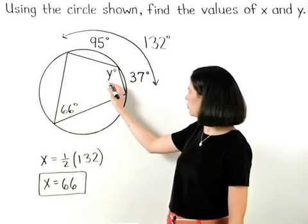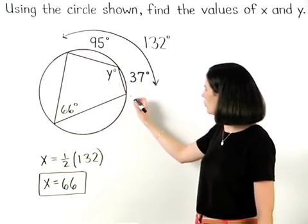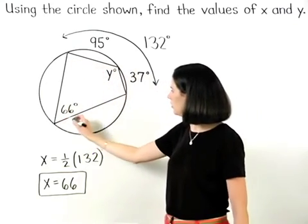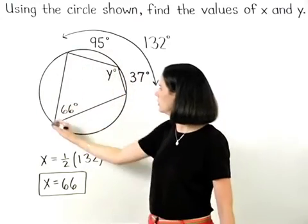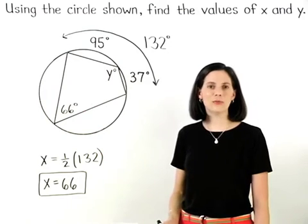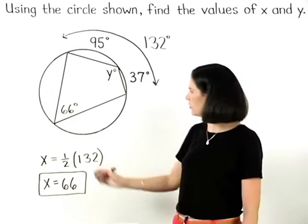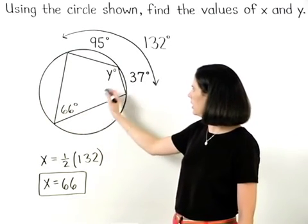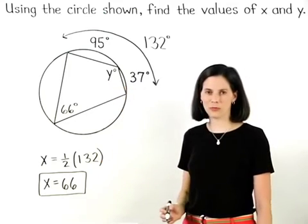Next, to find the value of y, remember that if a quadrilateral is inscribed in a circle, then opposite angles are supplementary. This means that the angles that measure 66 degrees and y degrees are supplementary.